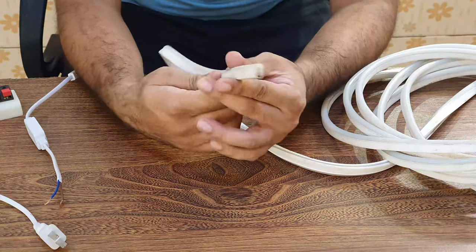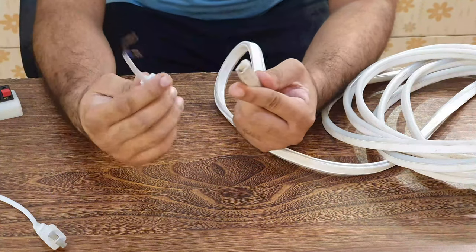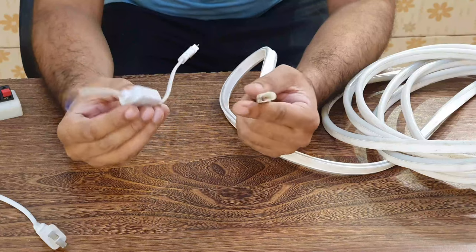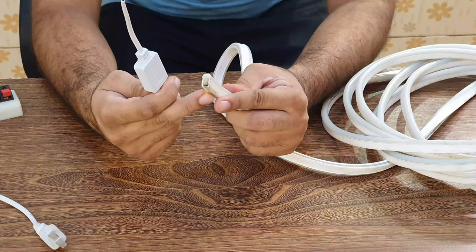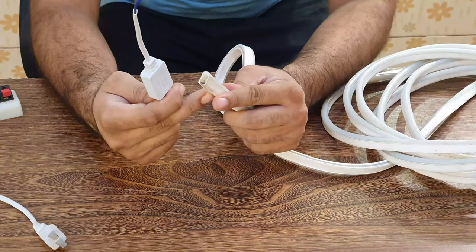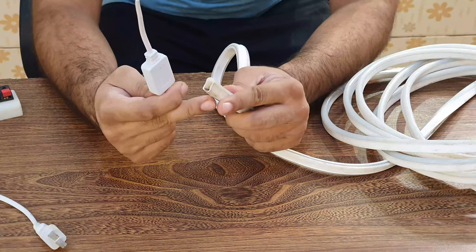First of all, you need two things: one is neon light and the other is a connector. We will use the connector which is 220 volts. The connector which has 12 volts is used for battery and solar.